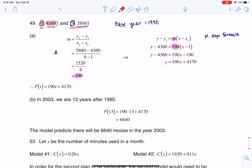I could have just as easily used 9 and 5,880, but then you see me plugging in my Y1 value at 4,360, and my X1 value at 1, and then it's a matter of just changing that over to slope intercept form, which I did.